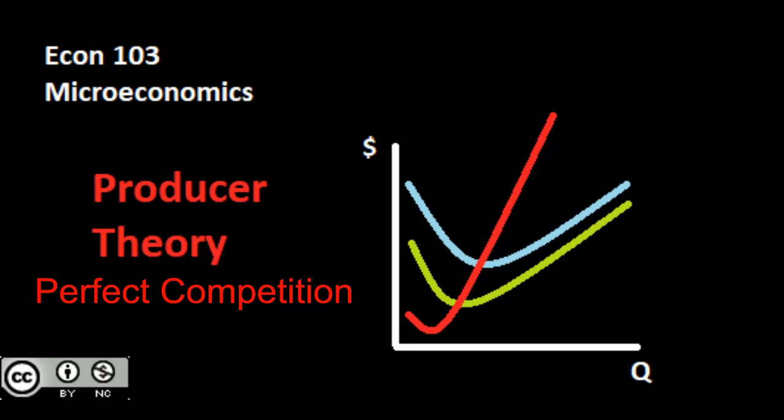In the first video, we took a look at our market structure, we applied those assumptions to perfect competition, worked through all the algebra for average revenue and marginal revenue, and figured out that all these were equal to price.